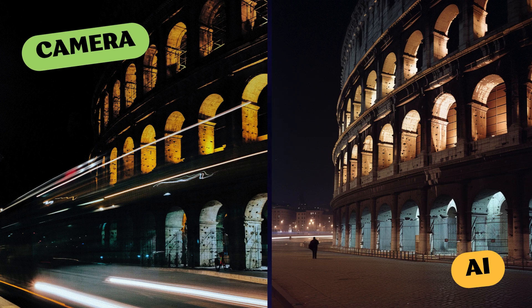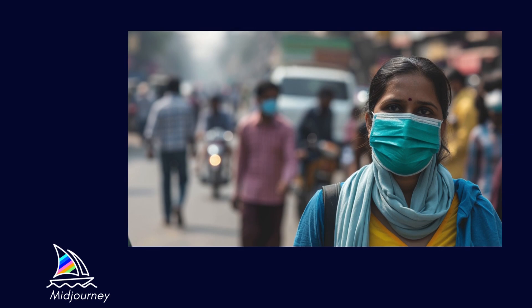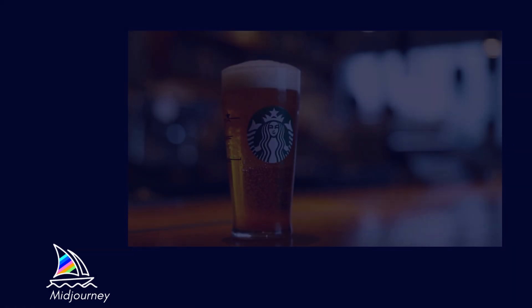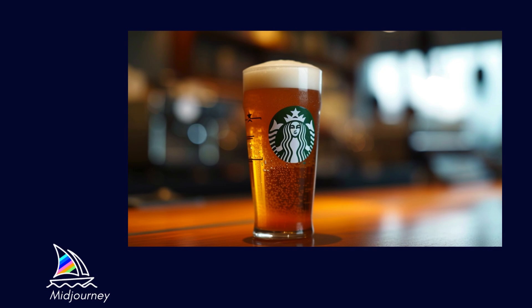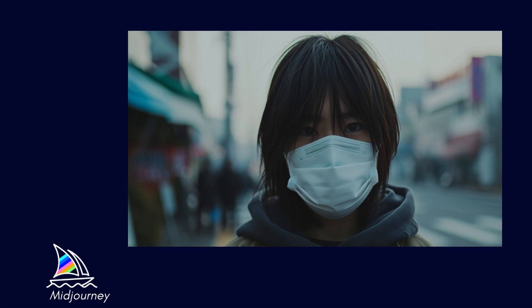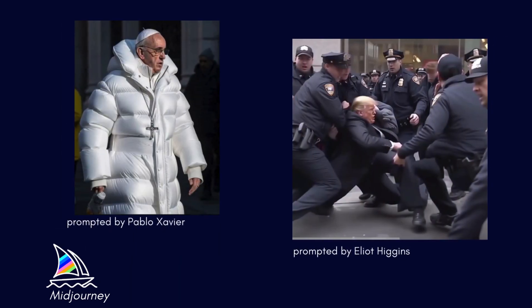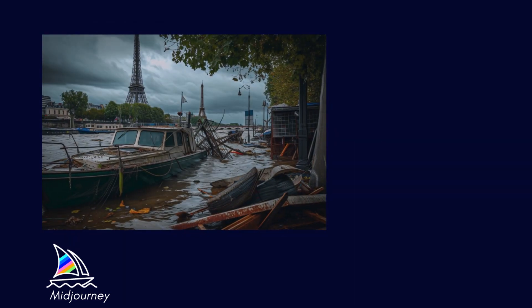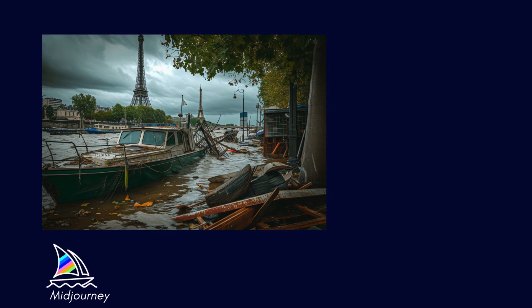AI image generators are producing more realistic images, and this is a measure of quality. But as AI image generators improve, it's getting harder and harder to identify AI-generated images. We're particularly concerned with deepfakes. These can range from creating fictional characters to generating fake news, so it's crucial to know how to identify them.